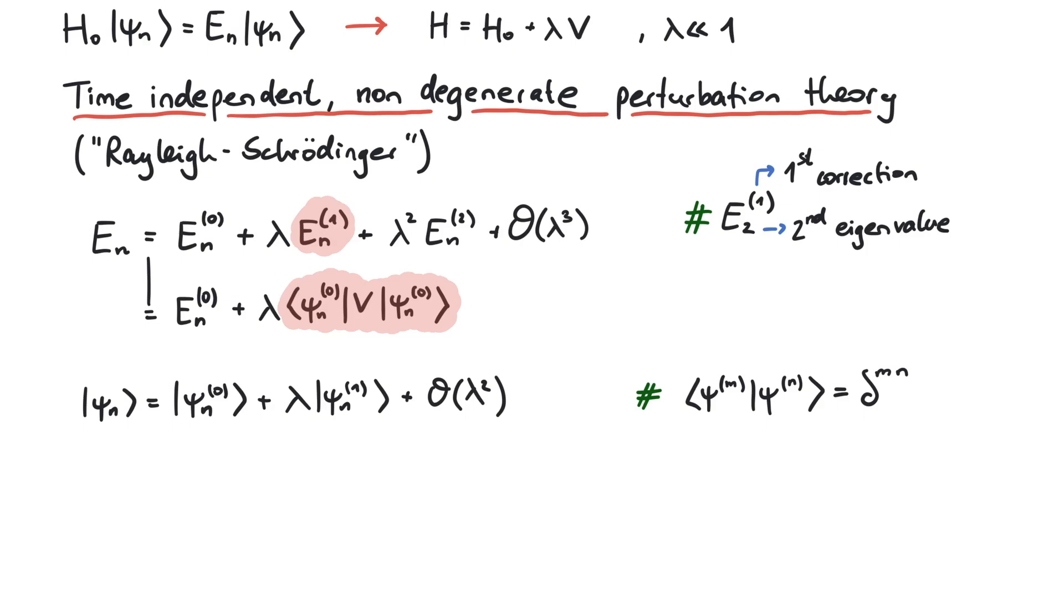For the second order correction, we have to do a bit more. First off, we have to calculate a matrix element of the new potential between the nth unperturbed eigenfunction and the kth unperturbed eigenfunction, and take the absolute square.